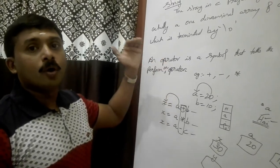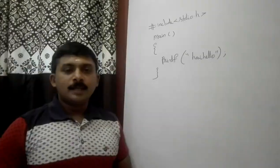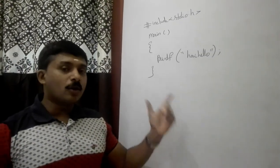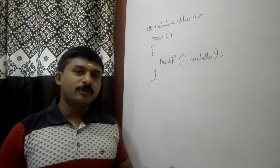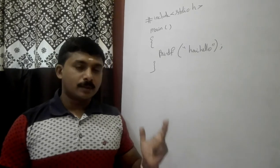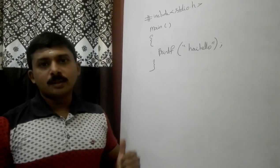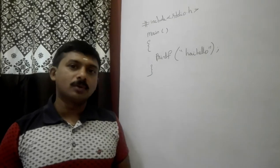To work with the compiler, we use operators. So, the C tokens are: keywords, identifiers, constants, strings, and operators — these are the five categories.